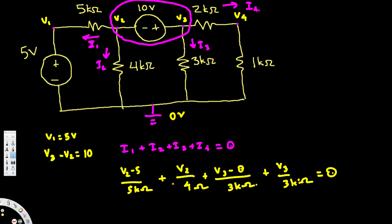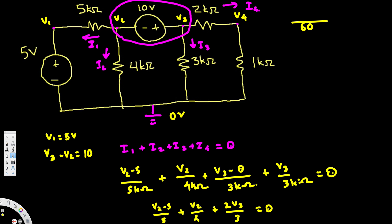Now let's simplify everything and set the sum equal to zero. Adding the terms, we have (V2 minus 5) over 5, plus V2 over 4, plus 2V3 over 3, all equal to zero. We take a common denominator — 5 times 4 is 20, times 3 is 60 — so we use 60 as the common denominator.